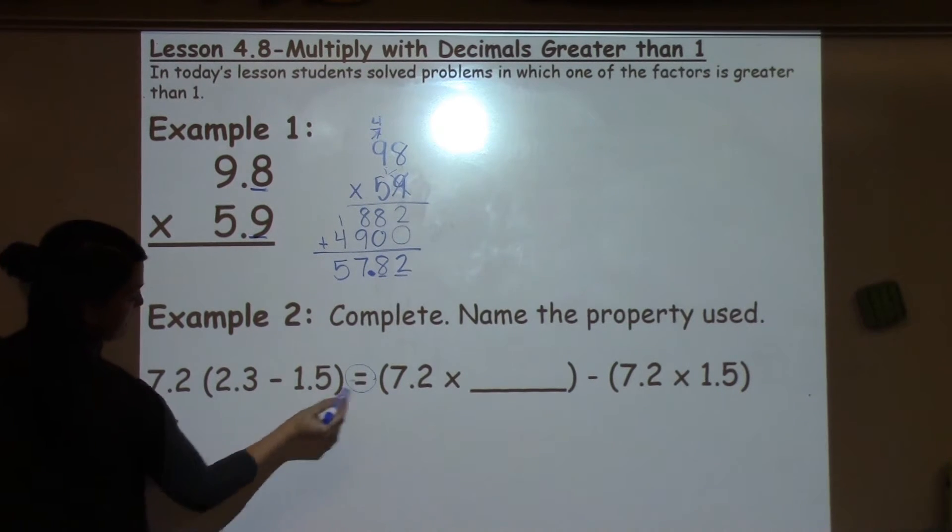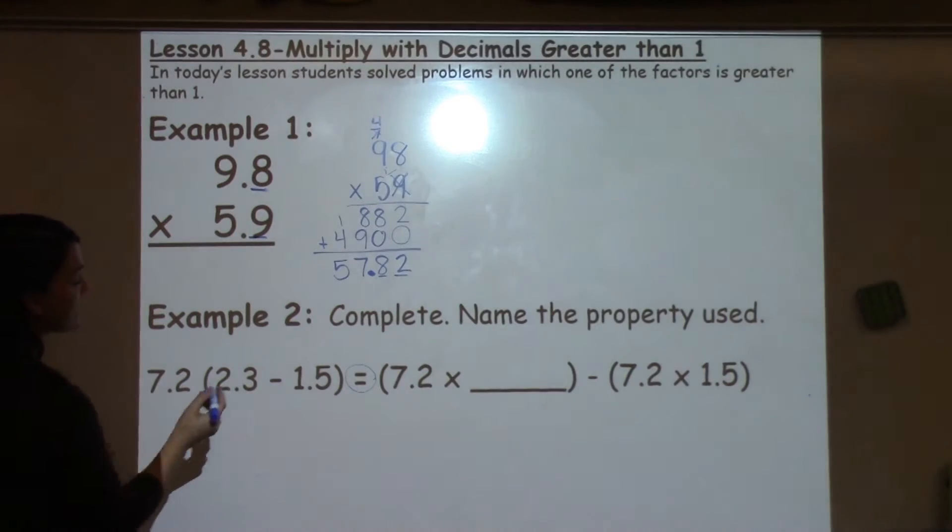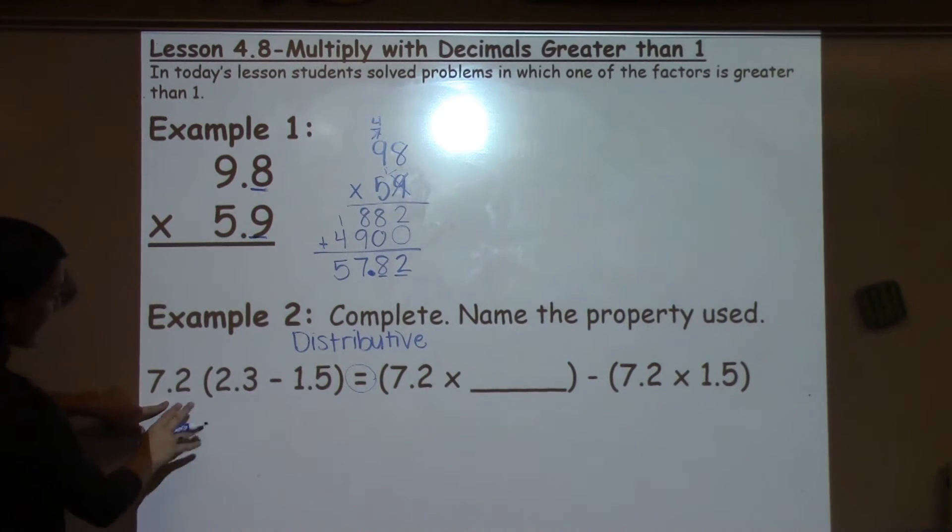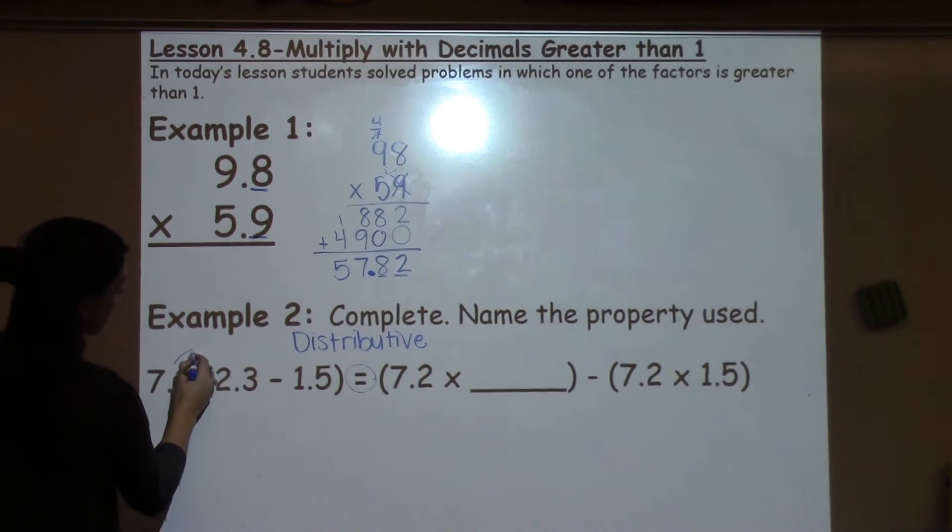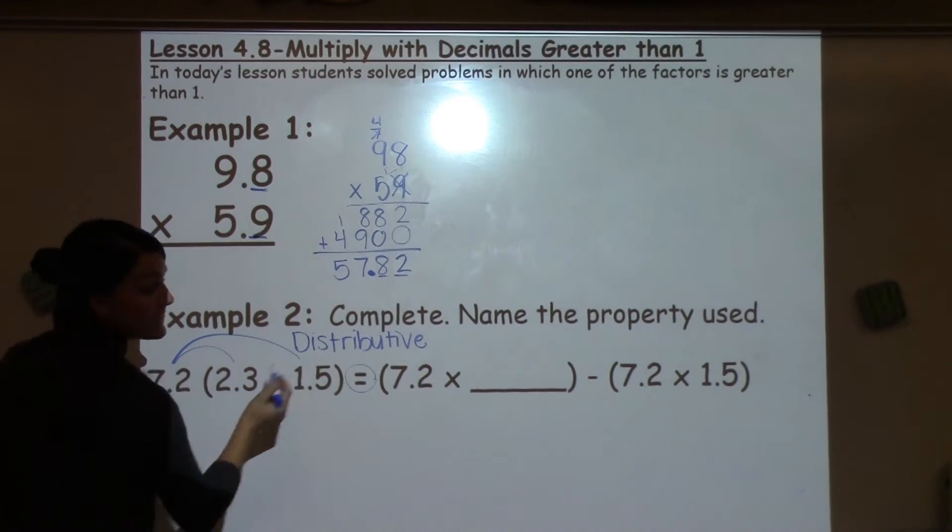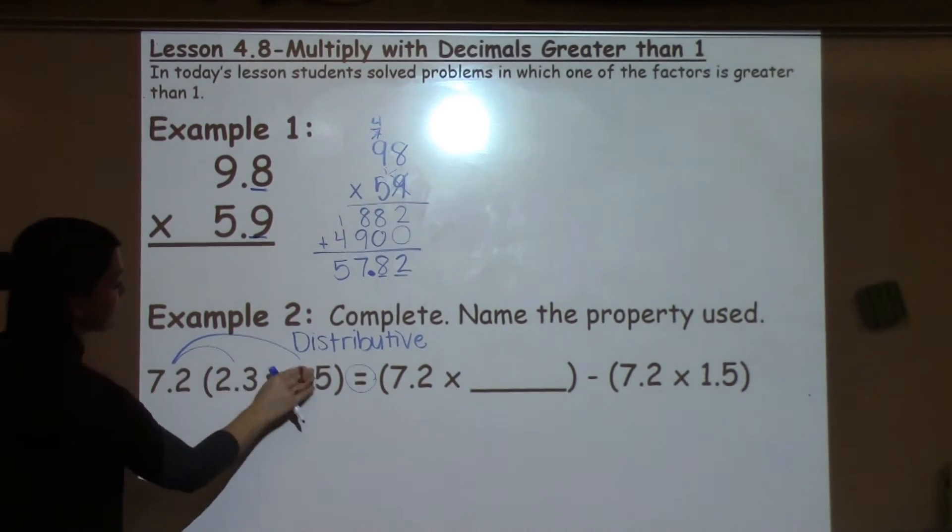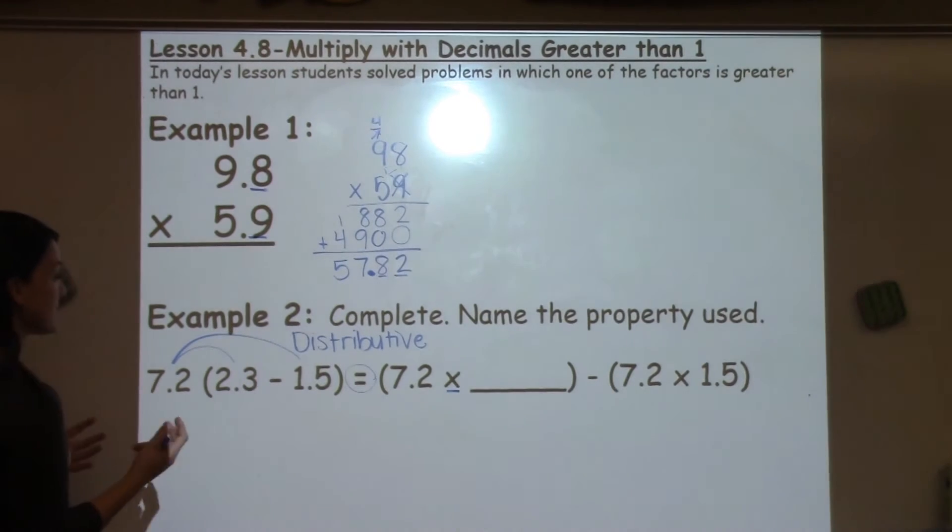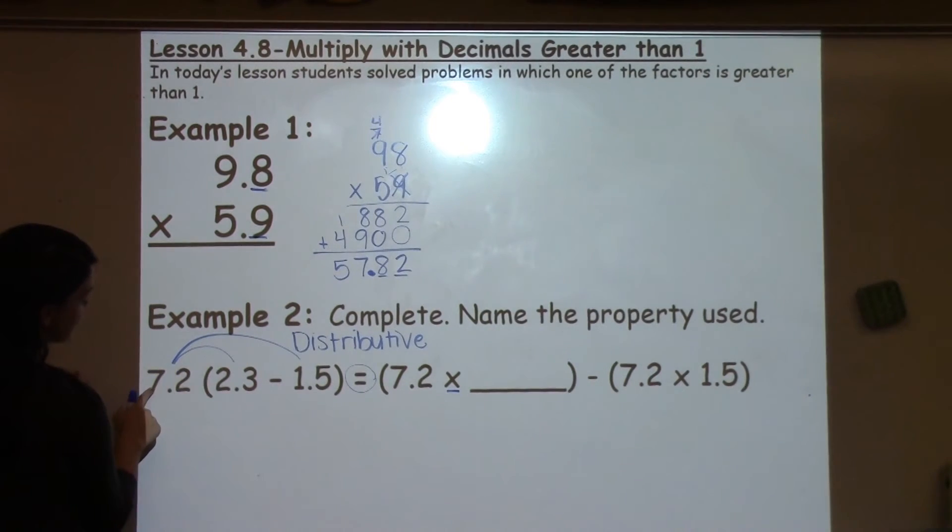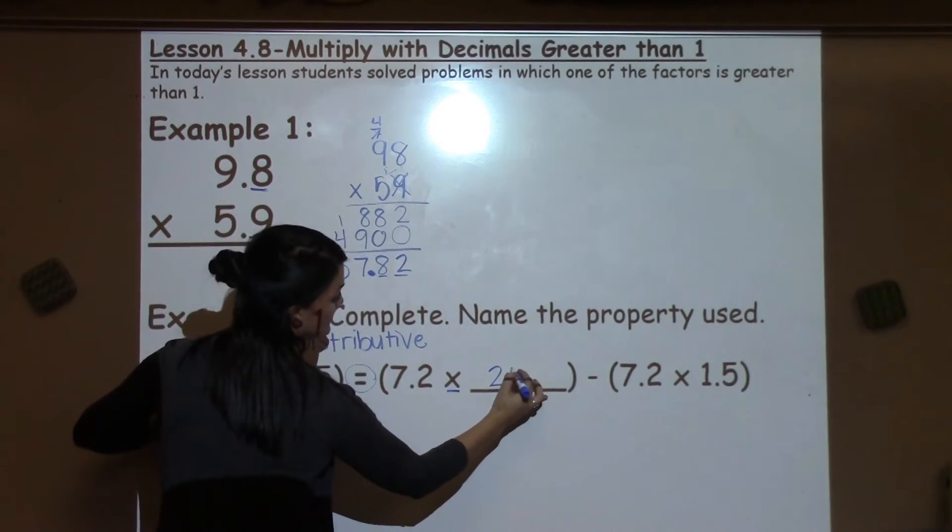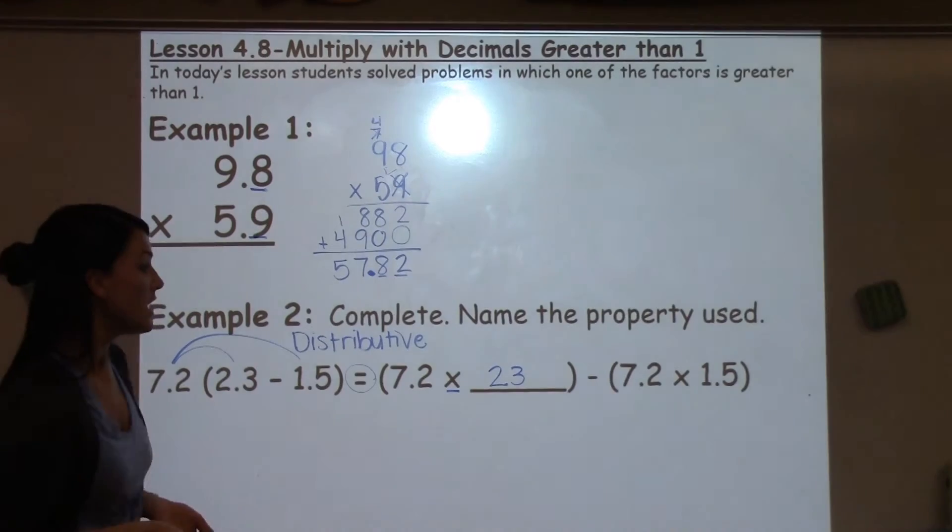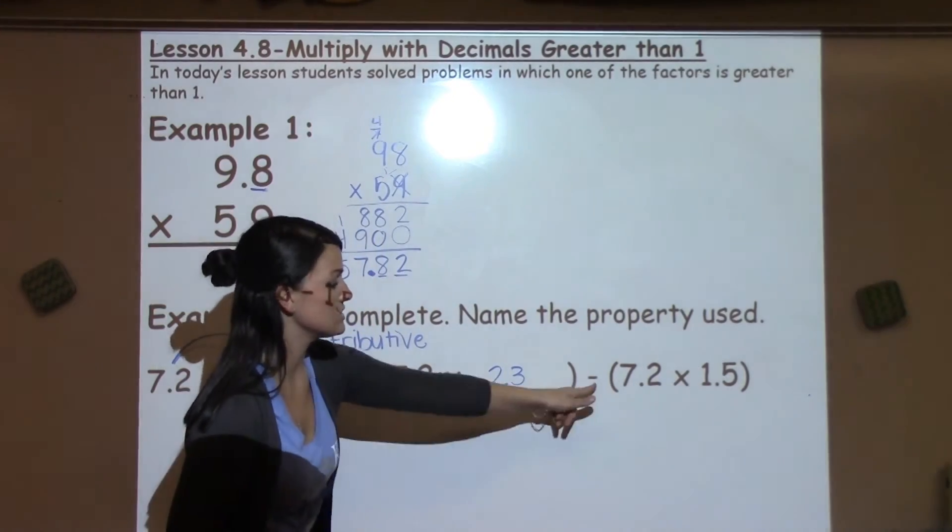When I'm looking at the fact that these equations are both equal to each other, I know that we're using the distributive property. The reason I know that is because when I have a number outside of parentheses, that number is distributed to each of the numbers inside using multiplication. So that means I need to take 7.2 times 2.3, then 7.2 times 1.5 and multiply. Then I could subtract.